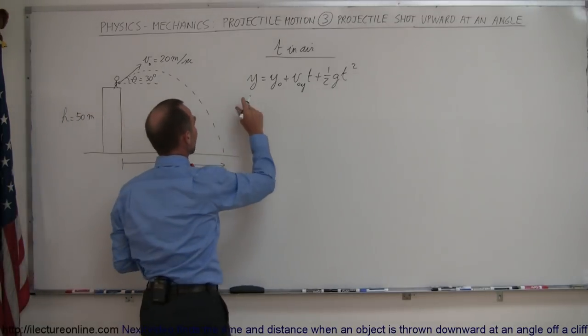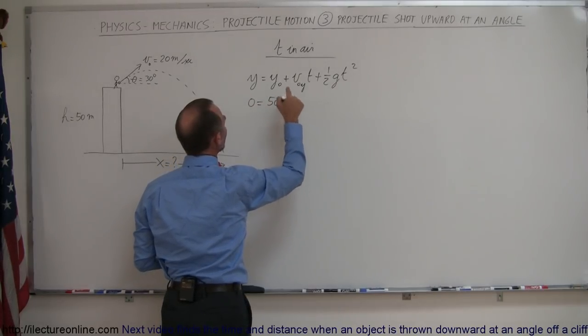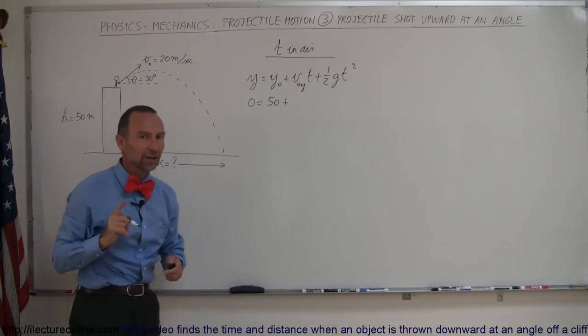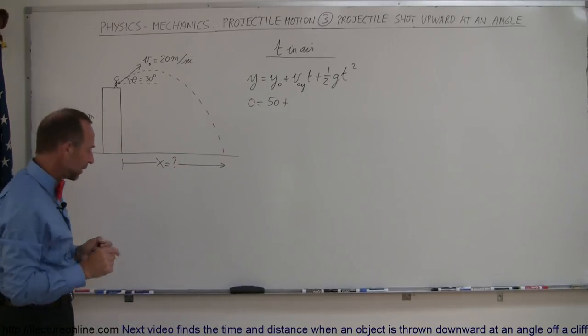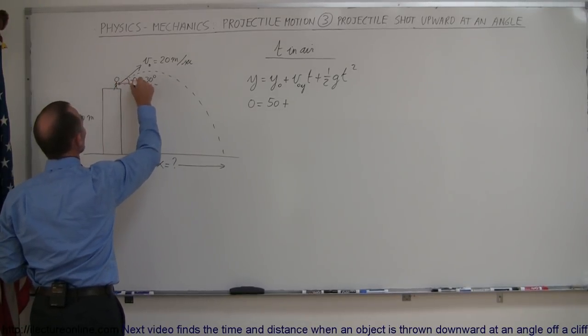So again final height when it hits the ground is zero. Initial height when it starts at 50 but now it does have initial velocity in the y direction. Before we can figure out what that is we need to find the components of the initial velocity.